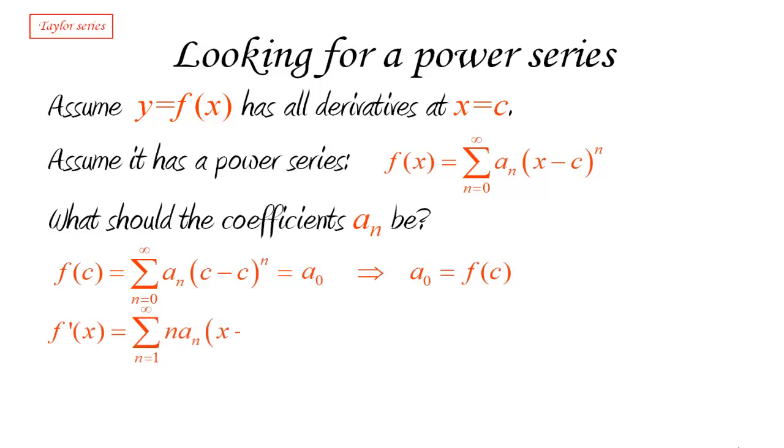f prime will be the sum from 1 to infinity—remember when we take the derivative we lose the first term—of what? Well, we're applying the power rule, so this becomes n times a_n(x-c)^(n-1). And we're going to play the same trick: we're going to compute the derivative at c. Why? Because that's going to get rid of practically all of the terms except the first one, which this time corresponds to the value of n equal 1. So if n equals 1, the power of c minus c simply does not exist, and we're left with just 1 times a_1. So f'(c) is going to be equal to a_1.